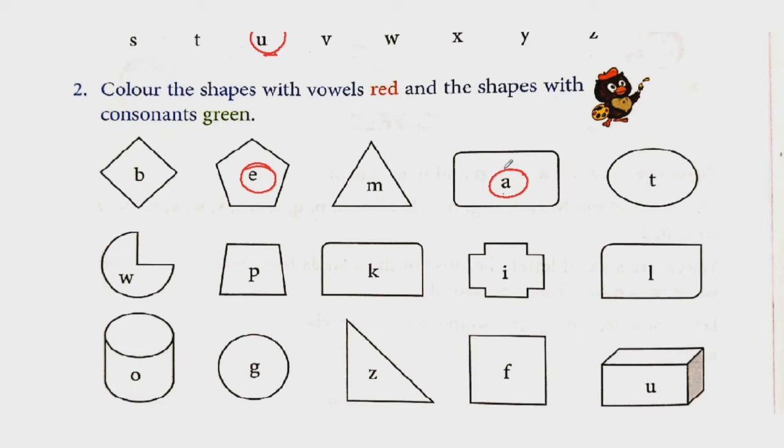T is not vowel. W is not vowel. P is also not vowel. K? No. Then I. Yes, I is vowel. L. No. But O is vowel? Yes. Now G. No. Z is not. F is also not. Last one U. So U is vowel. So the shapes we have circled, you have to color those shapes red. And all the remaining shapes you will color green.